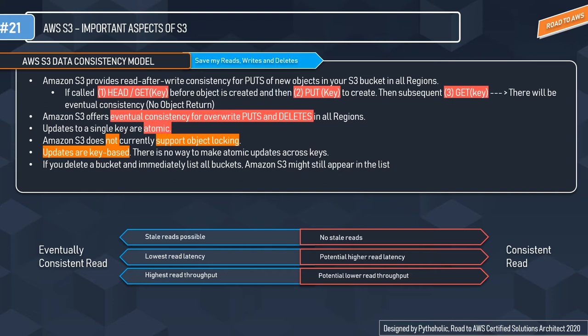AWS S3 provides read and write data consistency. It provides read-after-write consistency for PUTs of new objects in your S3 bucket in all regions, with a condition: if you make a HEAD or GET request to a key name before the object is created, and then create the object shortly after and immediately send a GET request, the GET request might not return the object due to eventual consistency.